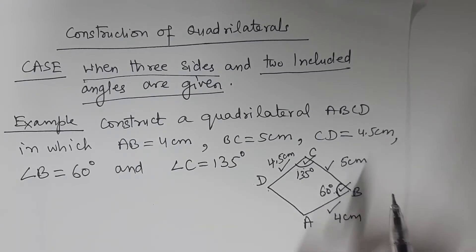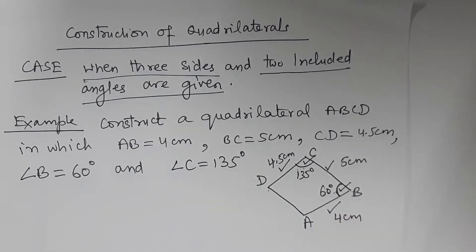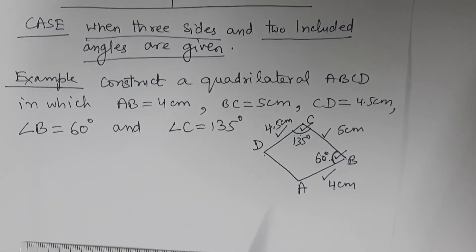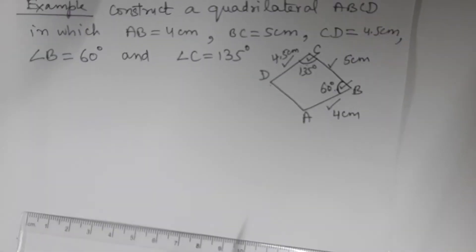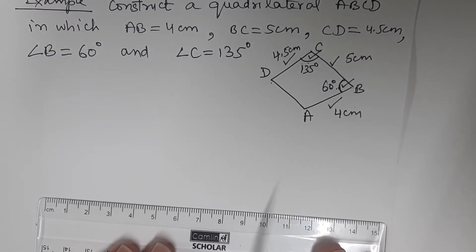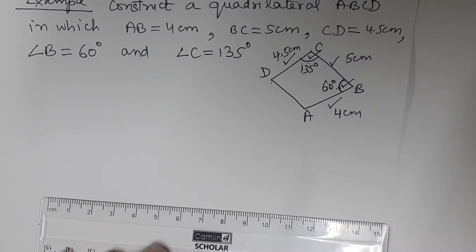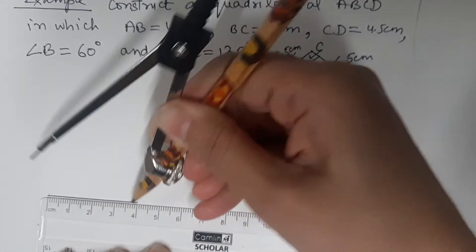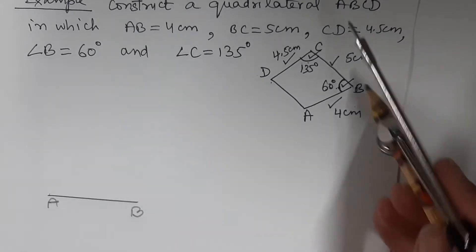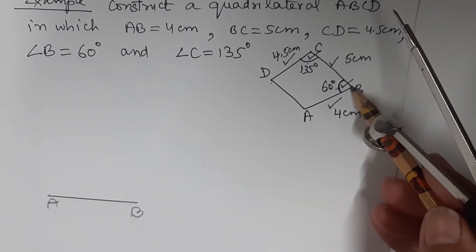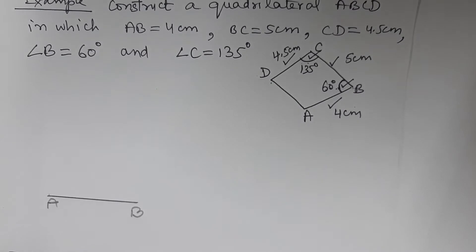Now we are going to see how to construct the quadrilateral. Step one: draw AB. AB is given to be 4 cm, so we are going to draw a line segment AB. Using a ruler we can easily do this — this is how we mark 4 cm AB.